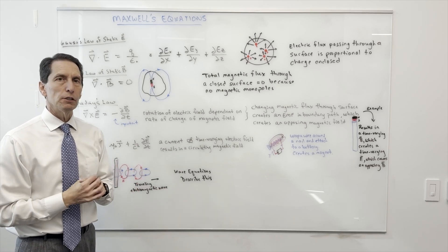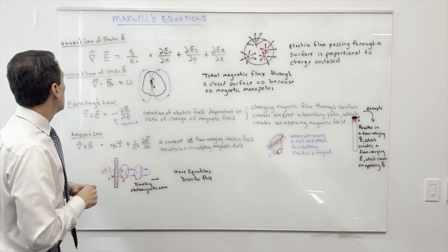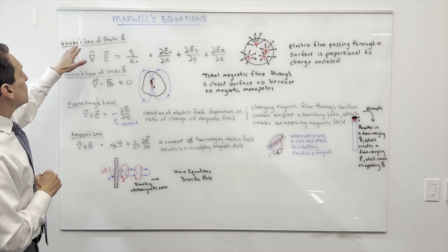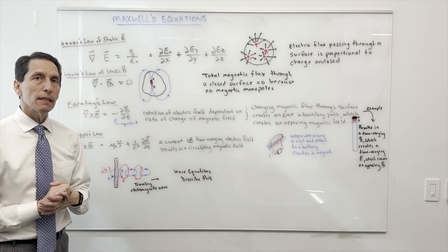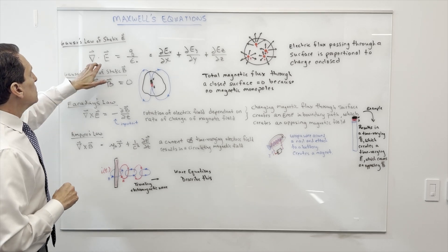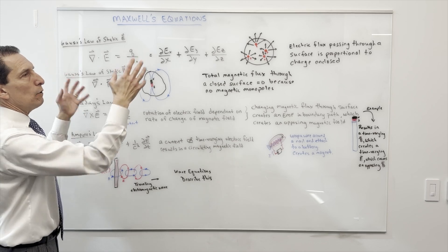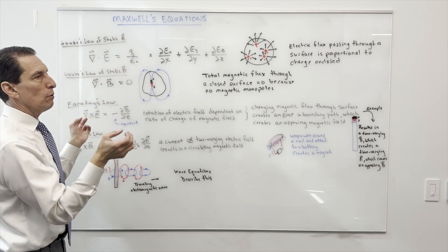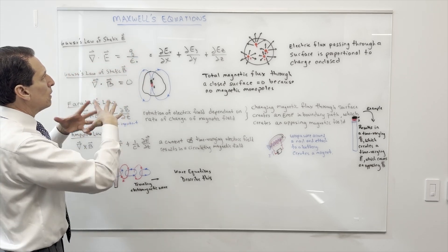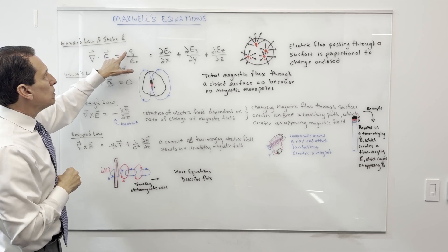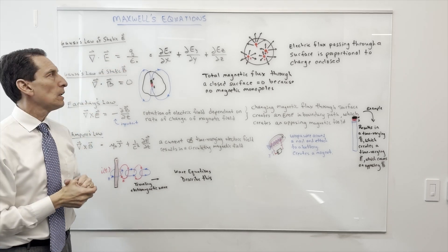The first one's called Gauss's Law of static electric fields. It basically just says that the divergence of the electric field—that is, the amount that goes out of some bounded space versus what came in, the total amount that goes out—is going to be the charge density divided by some constant.